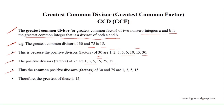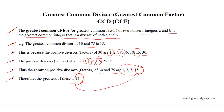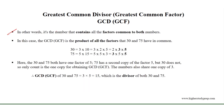Thus, the common positive divisors or factors of 30 and 75 are 1, 3, 5, and 15. Therefore, the greatest of these common positive factors is 15. In other words, it is the number that contains all the factors common to both numbers. In this case, the greatest common divisor is the product of all the factors that 30 and 75 have in common.